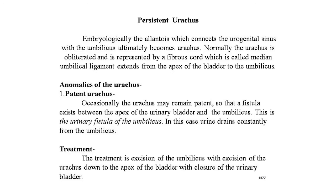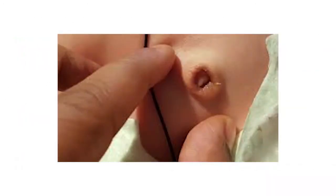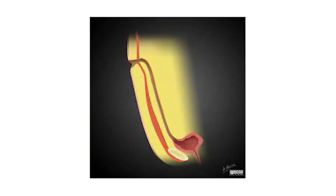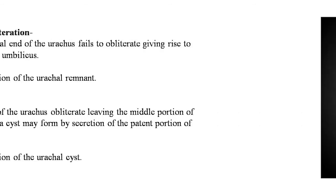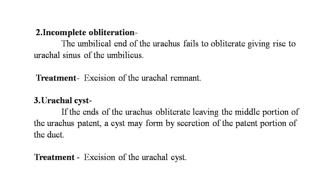Here is an image of the patent urachus — incomplete obliteration with a sinus and continued dribbling of urine is shown. Second, in incomplete obliteration, the umbilical end of the urachus fails to obliterate, giving rise to a urachal sinus of the umbilicus. Treatment is excision of the urachal remnant. Third, the urachal cyst: if the ends of the urachus obliterate leaving the middle portion patent, a cyst may form. Such cysts may become quite large, presenting as an immobile swelling in the midline in the hypogastrium, deep to the umbilicus. Treatment is simple excision of the urachal cyst.